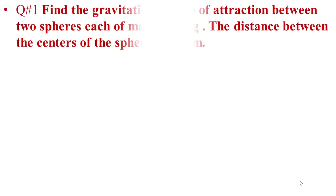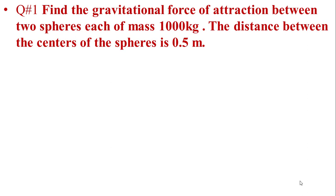In the first numerical, find the gravitational force of attraction between two spheres, each of mass 1,000 kg. The distance between the two centers of the spheres is 0.5 meters.